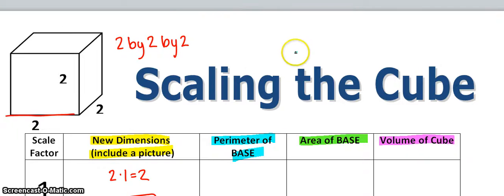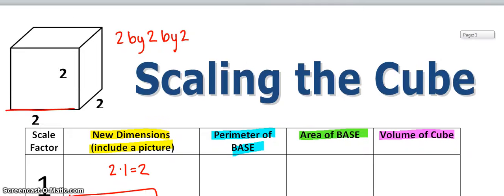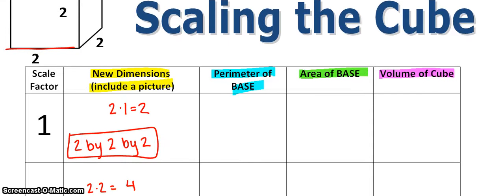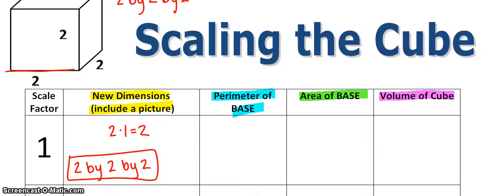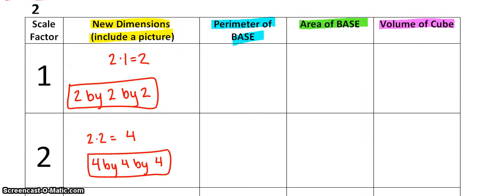So we started with a 2 by 2 by 2 cube. When you scale, you're really multiplying by that scale factor. If I scale it by a factor of 1, all the dimensions are really 2 times 1, which is still 2 — so I'd still have a 2 by 2 by 2 cube. When you scale something by a factor of 1, you're not changing the size at all. Whereas if you scale by a factor of 2, you're doubling the dimensions — 2 times 2 gives you 4, so this would be a 4 by 4 by 4 cube.